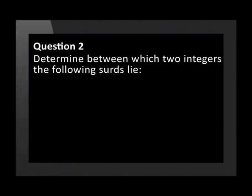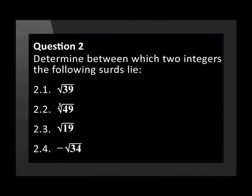Moving on to question 2 now. Determine between which two integers the following surds lie: square root of 39, cube root of 49, square root of 19, and negative square root of 34.